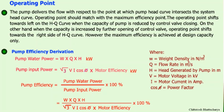Throttling through a valve increases system resistance and reduces flow. To increase flow, we can increase the head developed by the pump by increasing RPM — the system resistance will intersect the pump operating curve at a higher flow point. This way we can control the operating point of a pump with respect to system resistance and thereby control the flow.